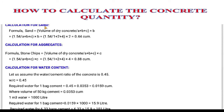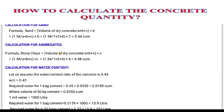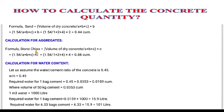Next, calculation of sand. The formula is the same: divide the volume of dry concrete by the sum of the ratio, then multiply by the sand ratio. Sand has a ratio of 2, so: 1.54 ÷ 7 × 2 = 0.44 cubic meters. On the calculator: 1.54 divided by 7, then multiplied by 2, gives us 0.44 cubic meters of sand required.